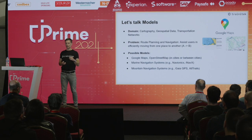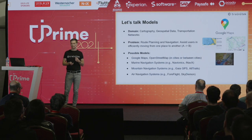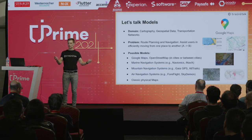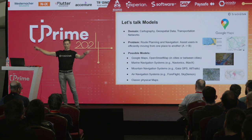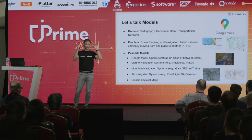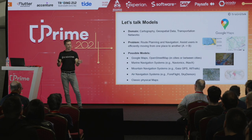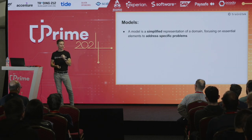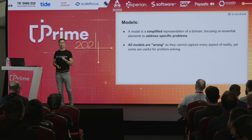What about mountain navigation? Will you use your phone in very high mountains and trust it to give proper tracks? You could die if you use it incorrectly. What about air navigation? You would use different, classical physical models. Google Maps solved a very specific problem: assist people moving from A to B in cities or between countries. But there are still many different models solving other problems. A model is a very simplistic representation of the domain focused on solving one specific problem.